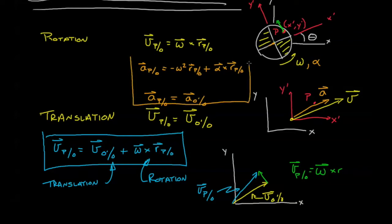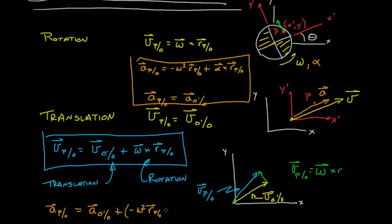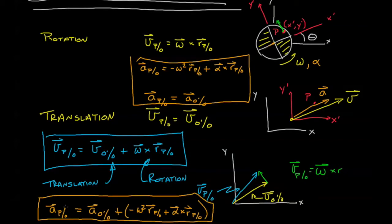We can combine these two terms now. We see that the acceleration of p with respect to o is equal to the translation effect, which is the acceleration of o prime with respect to o, plus the rotation effect. The rotation effect is minus omega squared times the position of p with respect to o prime, plus alpha crossed with the position of p. This tells us the overall effects of translation and rotation on the acceleration between two relative frames.